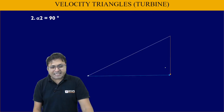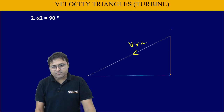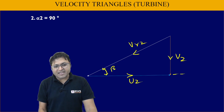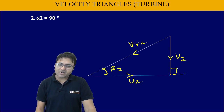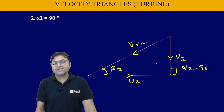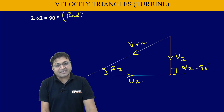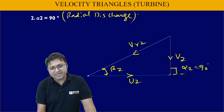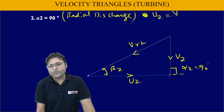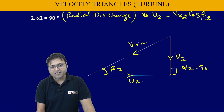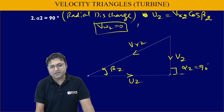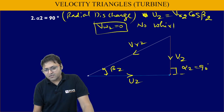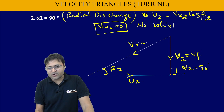When α2 equals 90 degrees: Vr2, U2, and V2 form the triangle with β2 inside and α2 (the guide vane angle) equal to 90 degrees. This is called radial discharge at outlet. In this case, U2 equals Vr2·cos β2, Vw2 equals zero — there is no whirl component, no tangential component of fluid velocity. Therefore V2 equals Vf2.